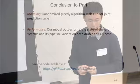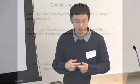In summary for Part 1: the simple randomized greedy algorithm works well for the hard joint prediction task. On both Arabic and Chinese, our model outperforms the state-of-the-art system and the pipeline variant of our model.